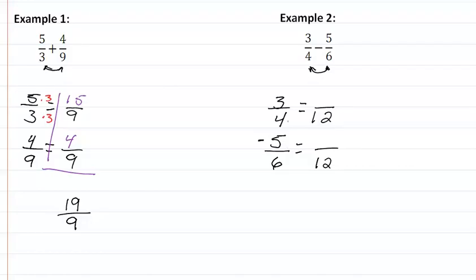So what do I have to multiply four by to get twelve? Well, I need to multiply by three, so I am going to multiply both the numerator and the denominator by three, and that is going to give me nine.